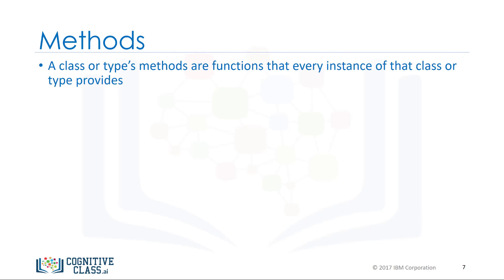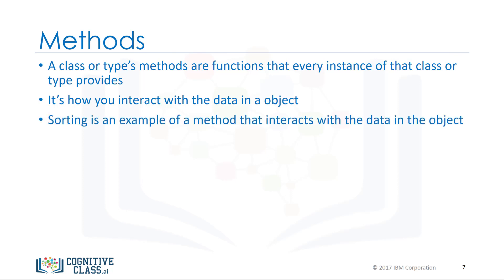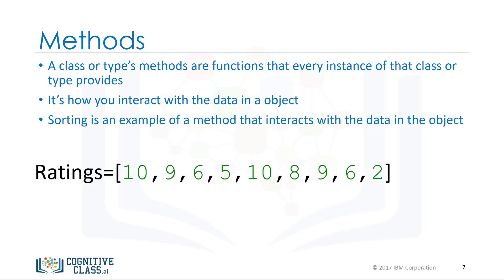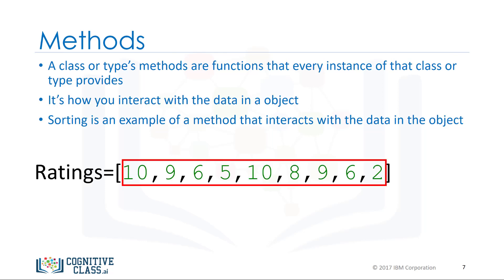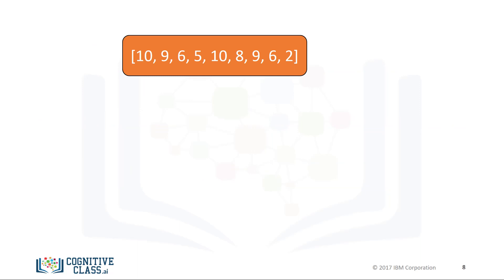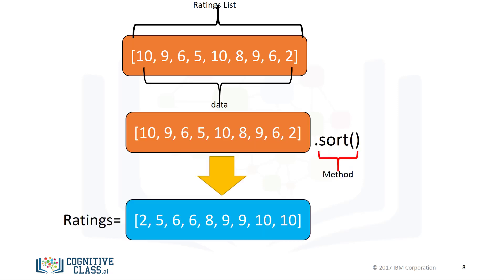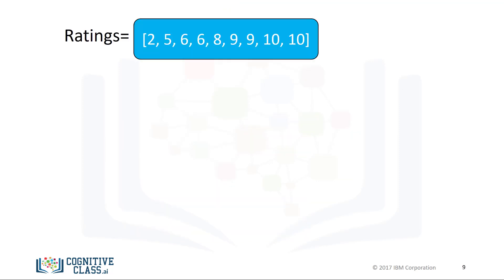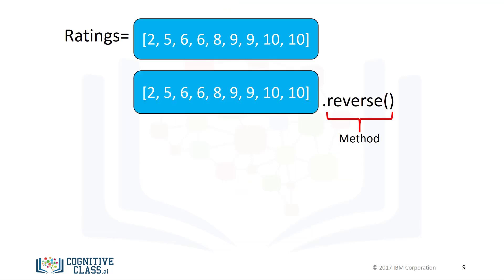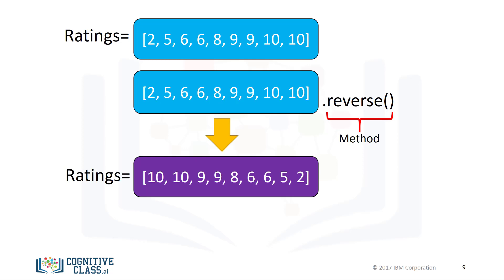A class or type's methods are functions that every instance of that class or type provides — it's how you interact with the object. We have been using methods all this time. For example, on lists, sorting is an example of a method that interacts with the data in the object. Consider the list ratings: the data is a series of numbers contained within the list. The method sort will change the data within the object. We call the method by adding a period at the end of the object's name followed by the method's name and parentheses. The sort method changes the data contained in the object — you can say it changes the state of the object. We can also call the reverse method on the list, reversing the order of the sequence within the object.